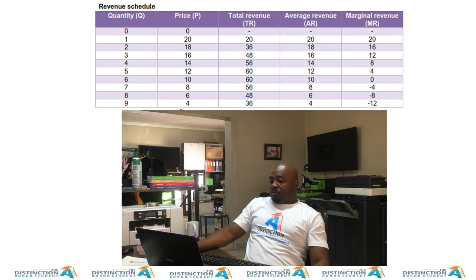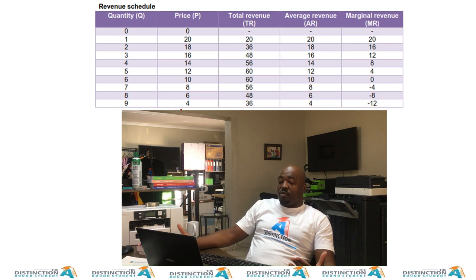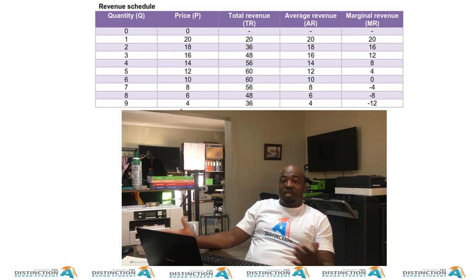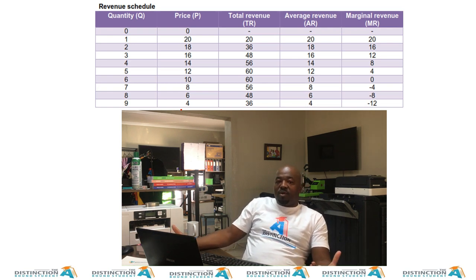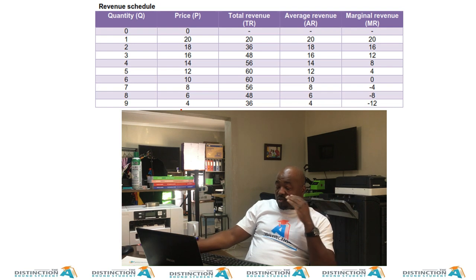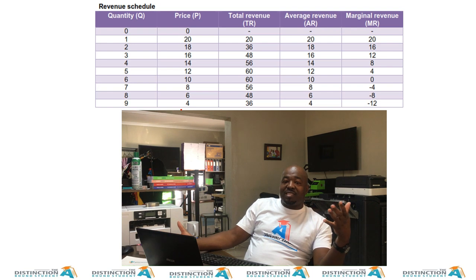Right, so if you study this table, you can see that we have quantities from zero to nine. We have price going down from 20 to as low as four. We have total revenue going up and then it starts to go down. We have average revenue mirroring, like doing exactly what the price is doing. We have marginal revenue dropping faster than price and AR. So we want to see, why is that? Well, like, if that's the case, not really why, because I'm not explaining that in this video. In this video, I want to show you that, okay, then let's take this information and construct a graph.